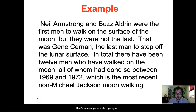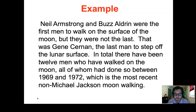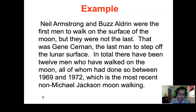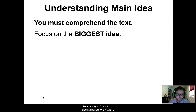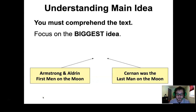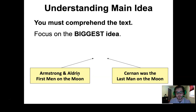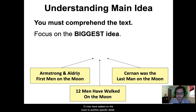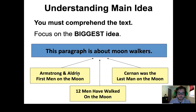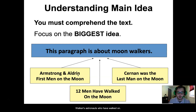Here is an example of a short paragraph: 'Neil Armstrong and Buzz Aldrin were the first men to walk on the surface of the moon, but they were not the last. That was Gene Cernan, the last man to step off the lunar surface. In total there have been 12 men who have walked on the moon, all of whom had done so between 1969 and 1972.' As we focus on this short paragraph, we would want to focus on the biggest idea. The specific men who walked on the moon are specific details, and that 12 men walked on the moon is another specific detail. Overall, the main idea of this paragraph is about moonwalkers — astronauts who have walked on the moon.